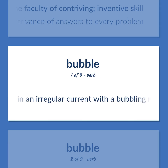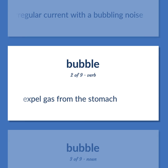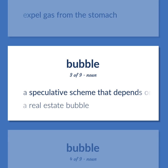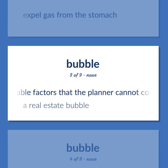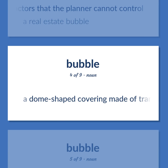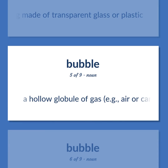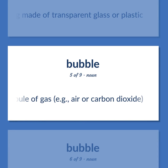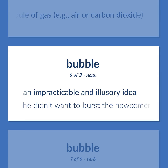Bubble: Flow in an irregular current with a bubbling noise. Expel gas from the stomach. A speculative scheme that depends on unstable factors that the planner cannot control — a real estate bubble. A dome-shaped covering made of transparent glass or plastic. A hollow globule of gas, e.g. air or carbon dioxide. An impracticable and illusory idea — he didn't want to burst the newcomer's bubble.